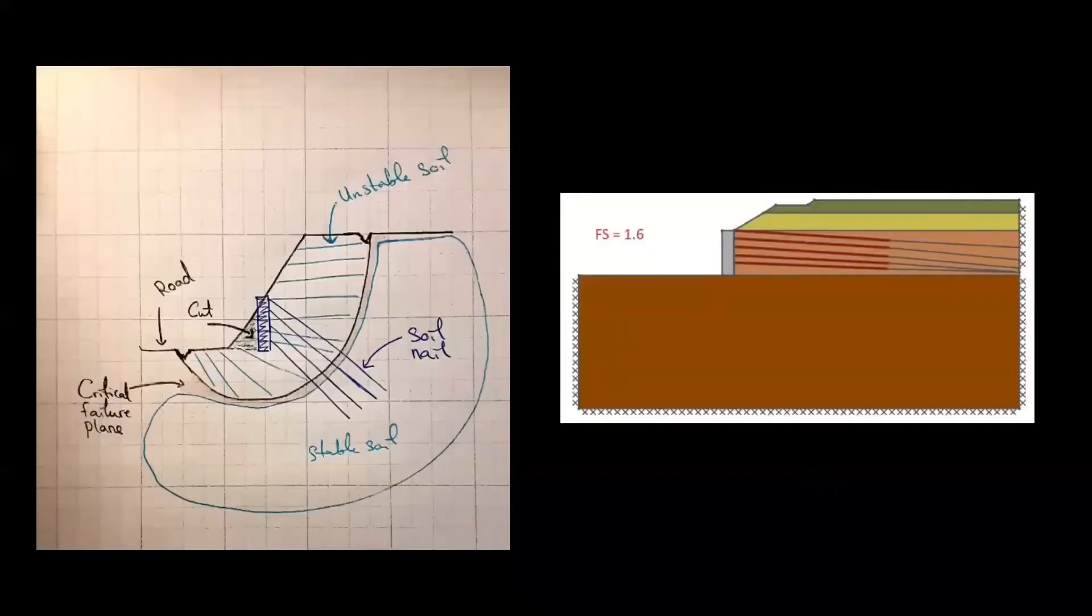In these diagrams, we can see the soil nailing being put into place. The first thing we have to do is cut out some of the current unstable soil to make room to place the soil nails. These nails then go through the unstable soil and are anchored into the stable soil.